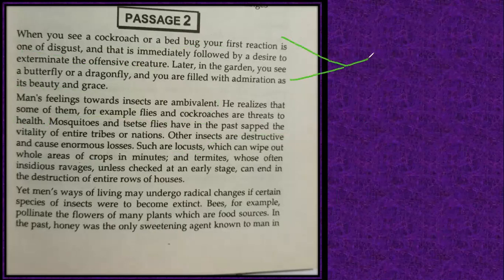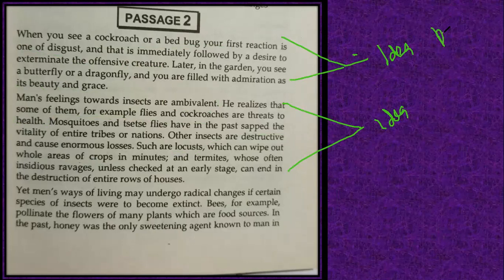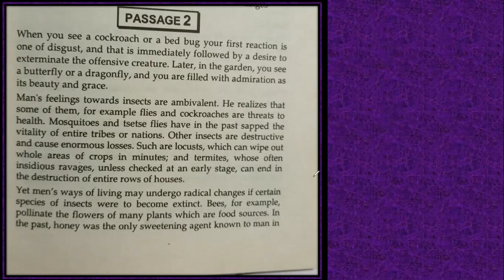Since we have to write a précis — a short summary of the whole passage — we need to take ideas from paragraphs P1, P2, and P3. Bees, for example, pollinate the flowers of many plants which are food sources. In the past, honey was the only sweetening agent known to man. Honeybees were very prominent in human life; humans got honey from bees and appreciated them because they give sweet honey.